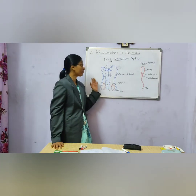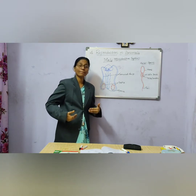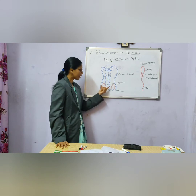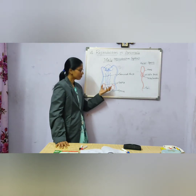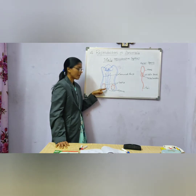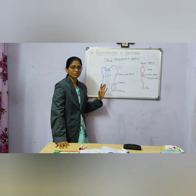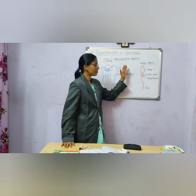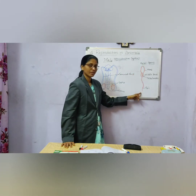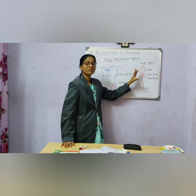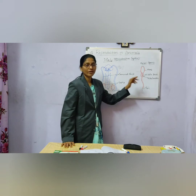Now we will see the male reproductive system, which is present in the abdomen of the male organism. Here we can see the different parts: egg-shaped testes — a pair of testes connected to the seminal duct. Millions of sperms are produced in the testes. They are microscopic and single-celled. The human sperm consists of a head, middle piece, and tail. The nucleus is in the head, mitochondria in the middle piece provides energy for travel, and the tail helps in movement.